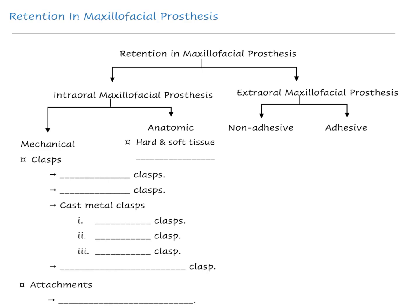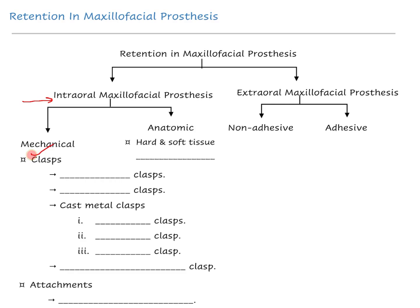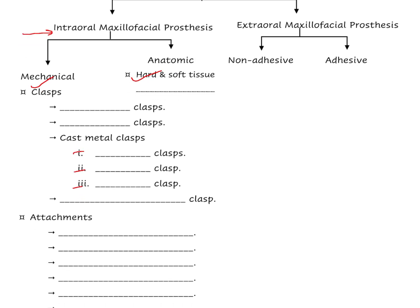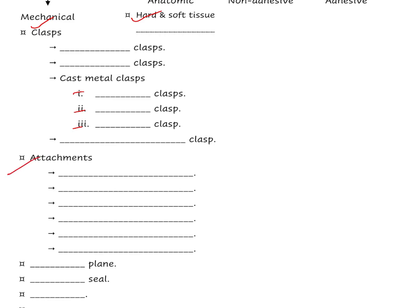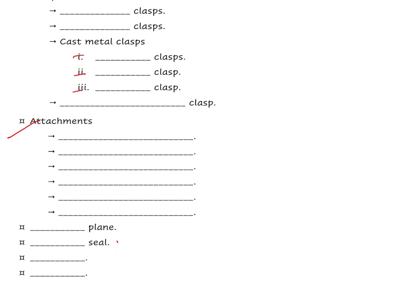This flowchart summarizes everything discussed. For intraoral prostheses, retention can be through clasp assemblies and hard and soft tissue undercuts. Clasps can be wrought wire type, stainless steel, cast metal type, in different configurations such as circumferential, ring clasp, T-clasp, or continuous clasps. Attachments can be precision (industry manufactured), semi-precision (lab casted), snap-on attachments, implants, magnets, swing-lock devices, and auxiliary retentive devices. You can also have guide planes, valk seals, springs, and adhesives.